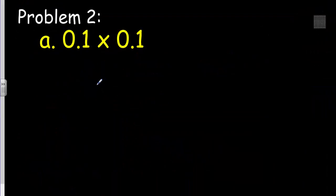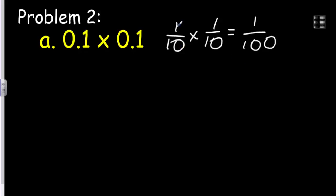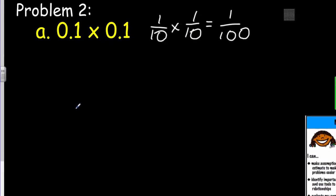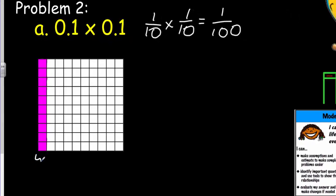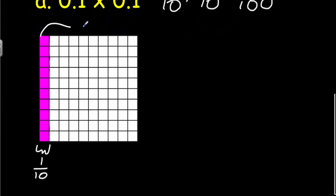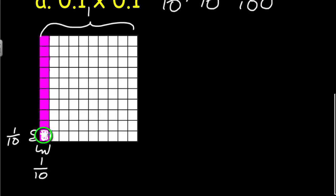Looking at this problem: one tenth times one tenth equals one hundredth. When we multiply fractions, we multiply the numerators across and the denominators across, getting one hundredth. Let's draw an area model using a 10 by 10 grid. This row shows one tenth of the whole, and one tenth of that one tenth gives us one hundredth — which you can shade in here. That one shaded square shows one hundredth.